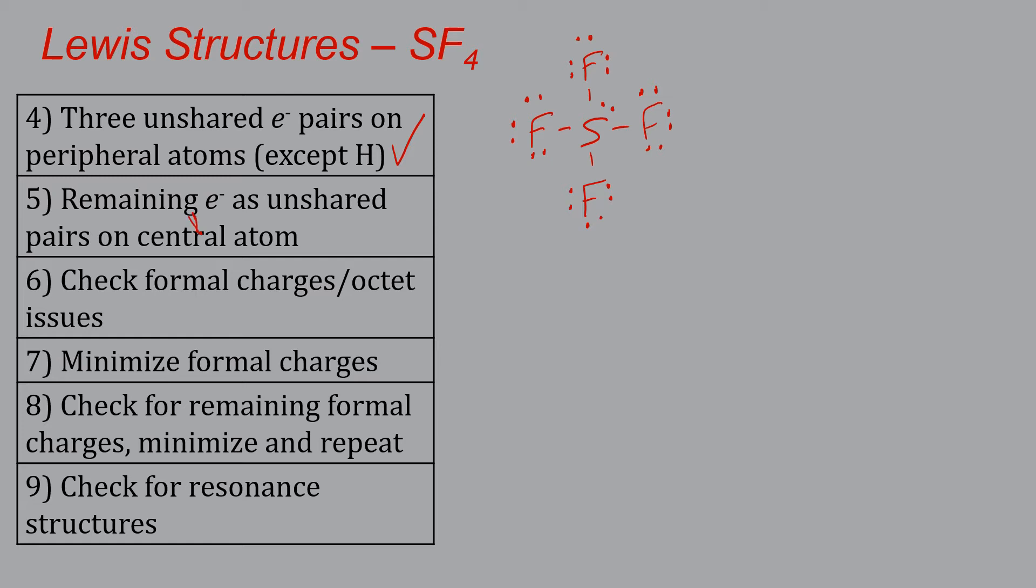Now, you might think that this is a problem. So let's look on to step six, now we're looking for octet or formal charge issues. From an octet standpoint, the fluorines are fine, fluorines are okay, in that they've got eight electrons, three unshared pairs and one shared pair each. But sulfur has 10 by this counting. And it does, but that is okay.